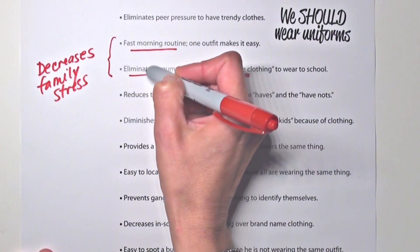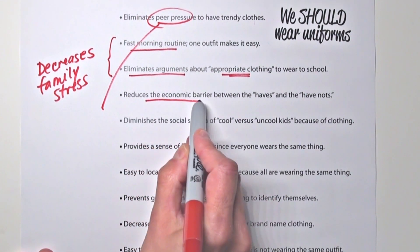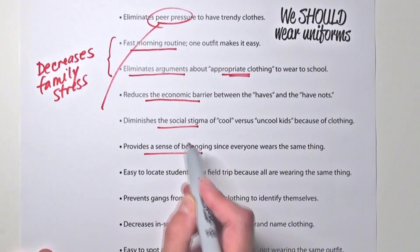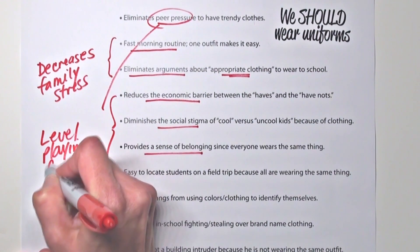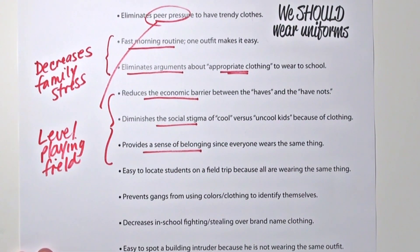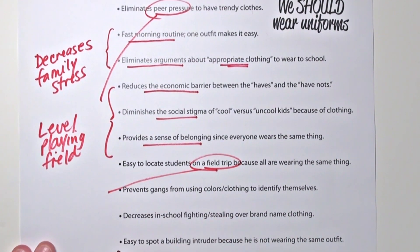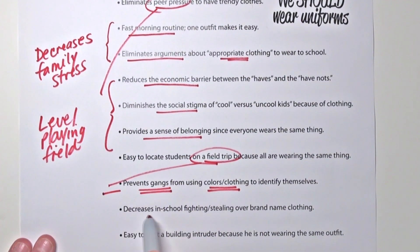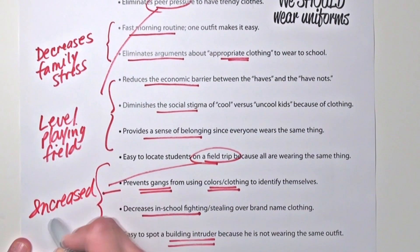That's a reason with multiple details. I could also group: eliminate peer pressure, reduce the economic barrier, diminish social stigma, and create a sense of belonging. And if we look at these last few details — easily finding kids on a school field trip, preventing gangs from using colors and clothing to identify themselves, decreasing fighting, stealing, and even spotting intruders in a building — all of those go with the idea of increased security.